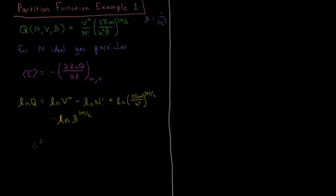Remembering that a power in the argument of a logarithm can be pulled out front, ln(V^N) becomes N·ln(V). So ln(Q) equals those same first three terms, plus minus 3N/2 times the natural log of beta. And that is the only term that has any beta dependence.